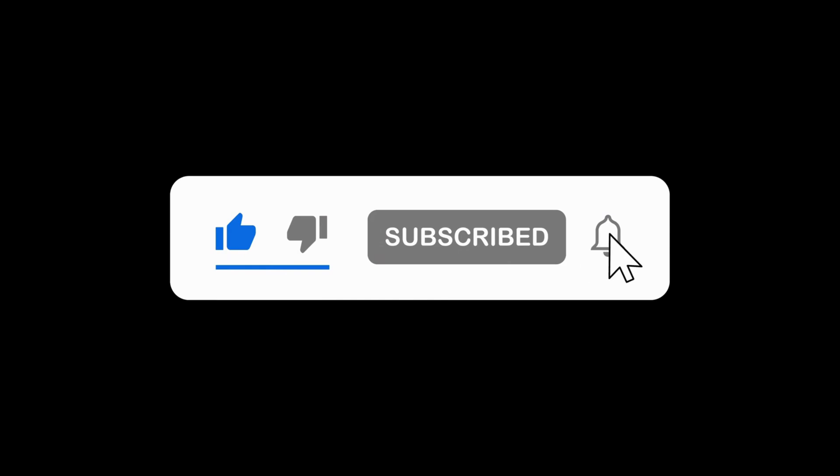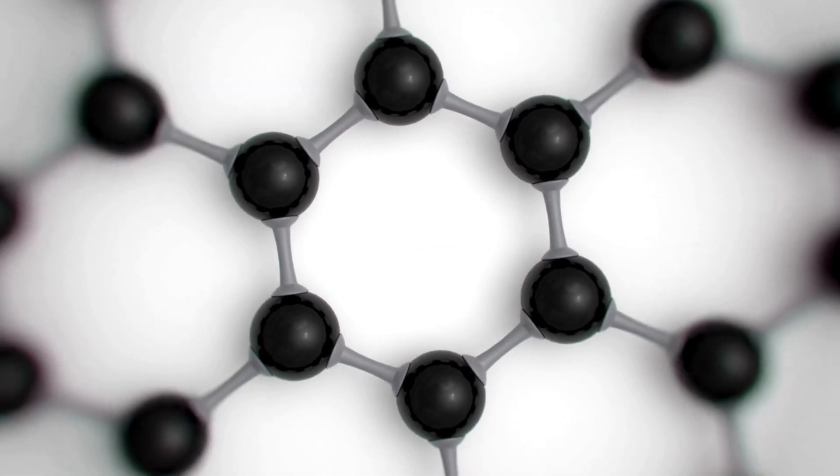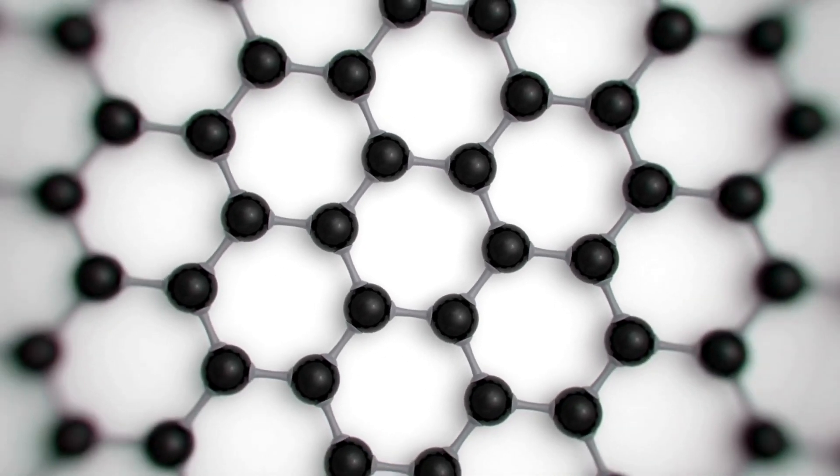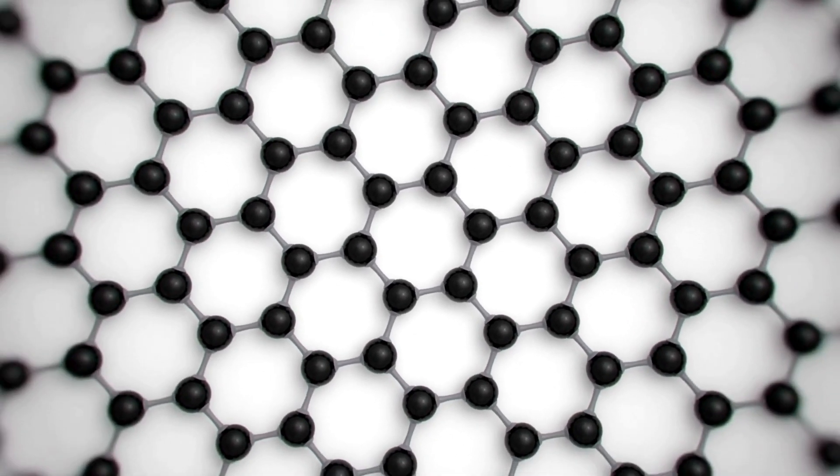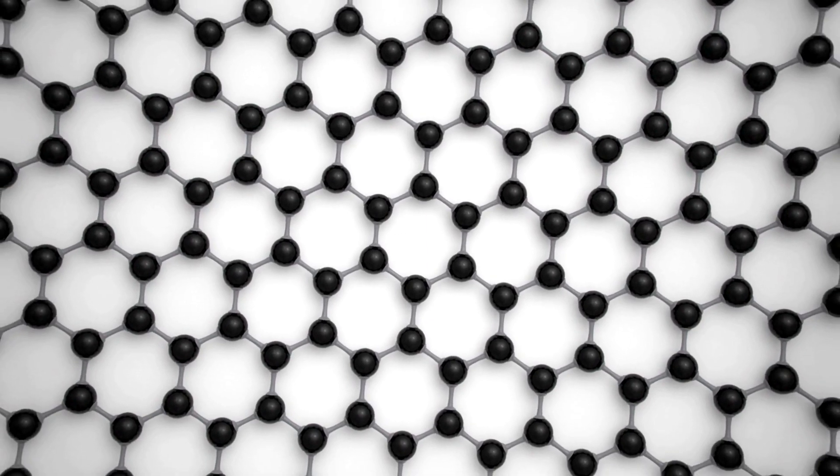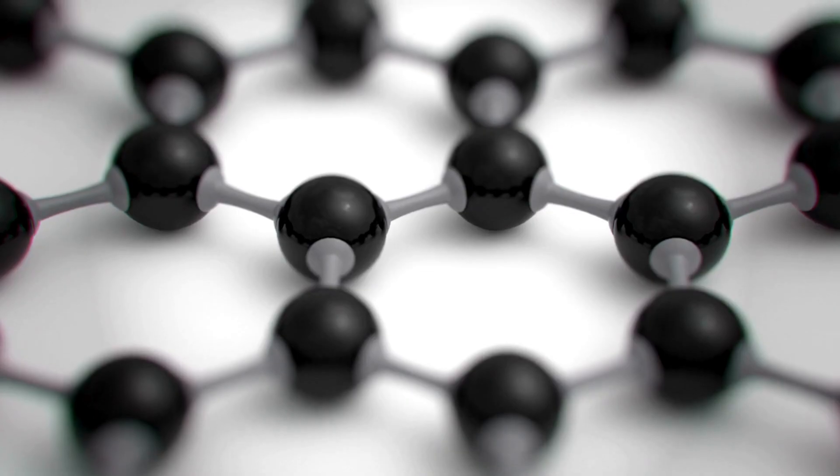We need your support to create more informational content like this. First things first, let's quickly recap what graphene is. Graphene is a single layer of carbon atoms arranged in a hexagonal lattice. It's super strong, lightweight, and an excellent conductor of electricity and heat.